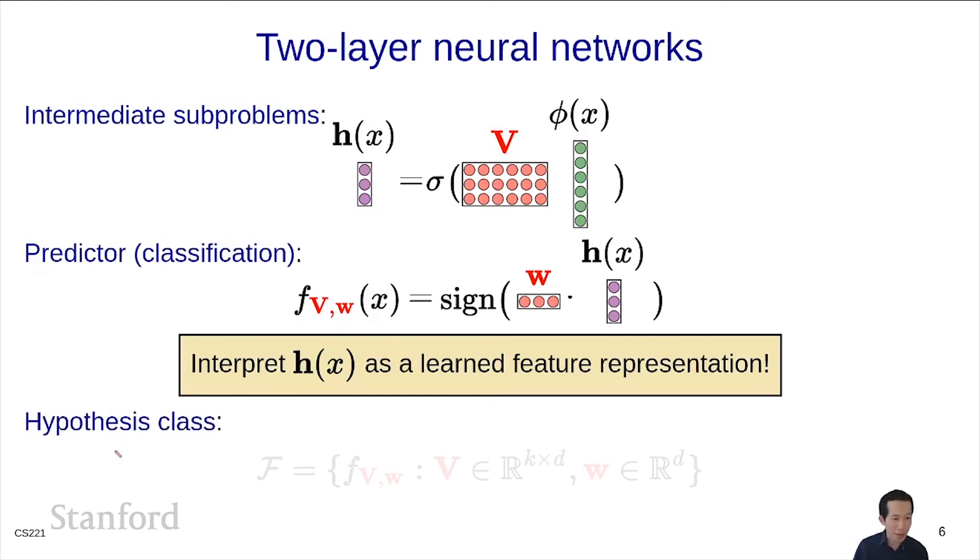We can define the hypothesis class F as the set of all predictors parameterized by weight matrix V and weight vector w. We let V be any arbitrary k by d matrix and w be any k-dimensional vector. This is the hypothesis class for two-layer neural networks for classification.